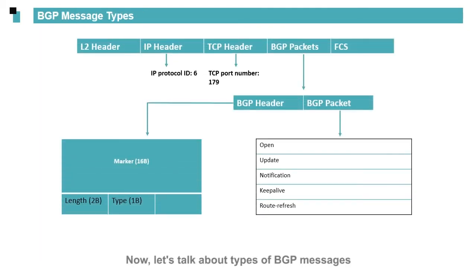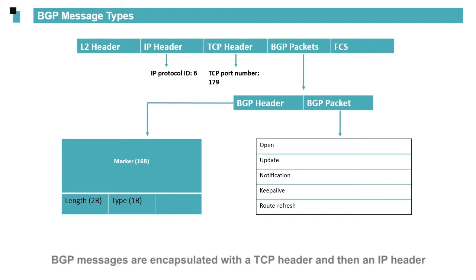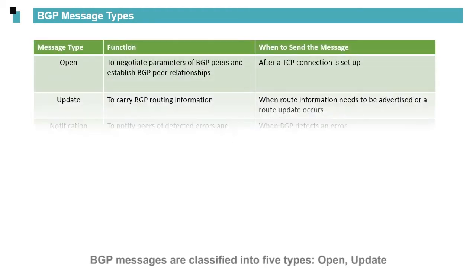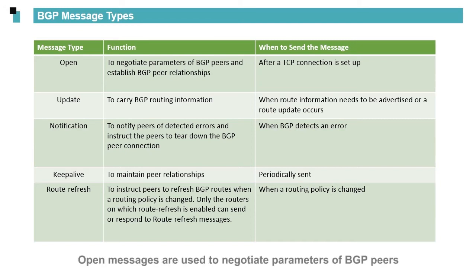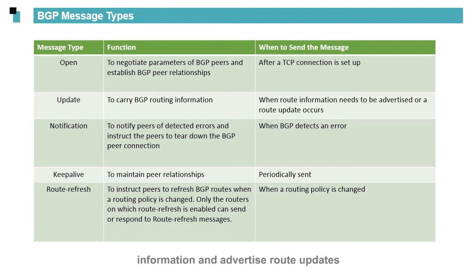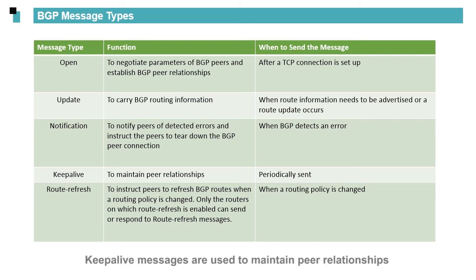Now, let's talk about types of BGP messages. BGP messages have a common BGP header, followed by the BGP message content. BGP messages are encapsulated with a TCP header and then an IP header. BGP messages are classified into five types: Open, Update, Notification, Keepalive, and Route Refresh. Open messages are used to negotiate parameters of BGP peers. Update messages carry BGP routing information and advertise route updates. Notification messages notify peers of detected errors. Keepalive messages maintain peer relationships and confirm parameters in Open messages. Route Refresh messages instruct peers to refresh BGP routes.